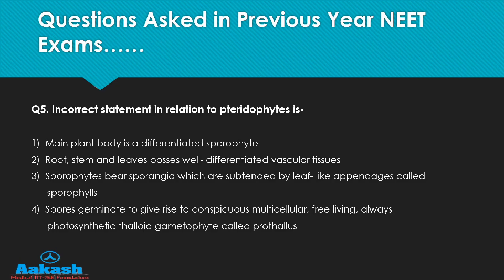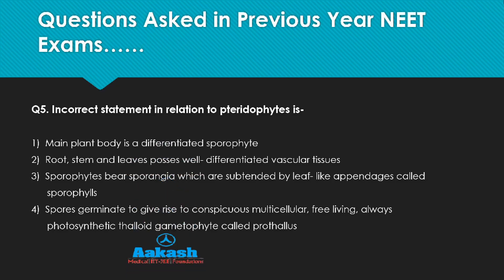The fourth option says spores germinate to give rise to conspicuous, multicellular, free-living, always photosynthetic and thaloid gametophyte called prothalus. Students should know from NCERT that prothalus is inconspicuous — not visible to the naked eye — and is small, multicellular, free-living, photosynthetic and thaloid. So the fourth option is a wrong statement because of the word 'conspicuous' — it should be 'inconspicuous.' Therefore the correct answer for this question is the fourth option.